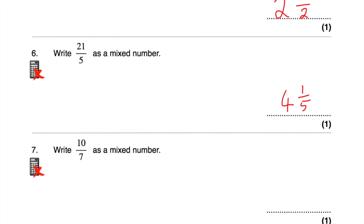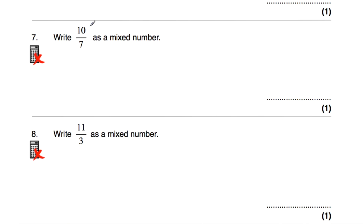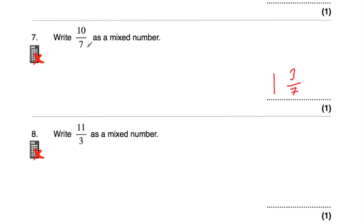Question number 7: write 10 sevenths as a mixed number. How many 7s go into 10? That's going to be 1, with a remainder of 3. So it's going to be 3 sevenths, and the answer is 1 and 3 sevenths. We can check that: a whole is 7 sevenths, and adding 3 sevenths gives 10 sevenths.